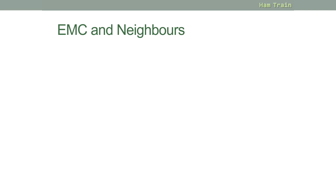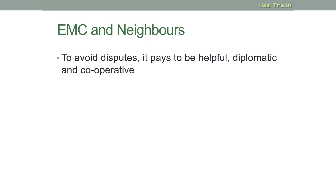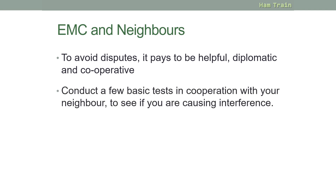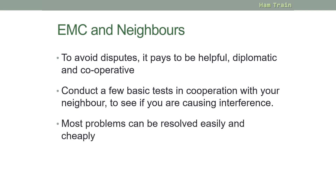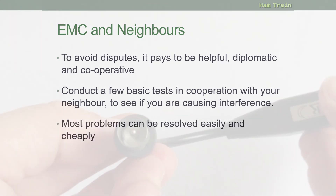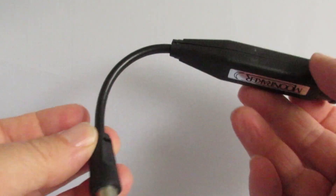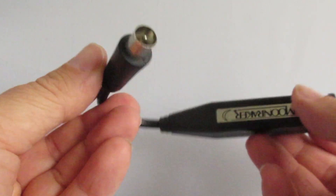What about dealing with neighbours if they believe that you are causing interference? Well, to avoid disputes, it pays to be helpful. Be diplomatic and cooperate. You should conduct a few basic tests in cooperation with your neighbour, just to double check it's definitely you that's causing interference. Most problems can be resolved quickly, easily, and more importantly, cheaply. For example, the simple filter that we looked at earlier is less than £10 typically.